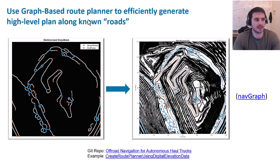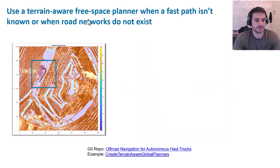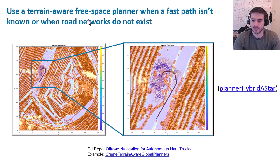Here we can see our graph-based route planner — you can see the sparse nature of the graph within our space. The goal is simply to provide a very fast initial route from point A to point B. Here you can see the start location as we navigate all the way to the bottom of the mine. As we need to get onto the path generated by the graph planner, we use our terrain-aware free-space planner — essentially Planner Hybrid A* with an additional customized cost function that penalizes trajectories along steep terrain, guiding the path toward a more optimal solution.